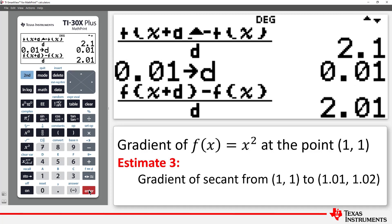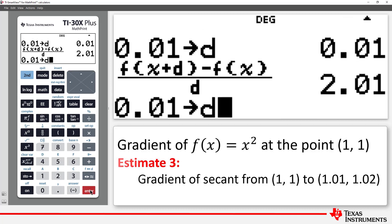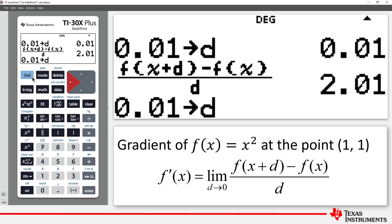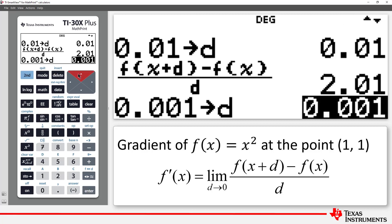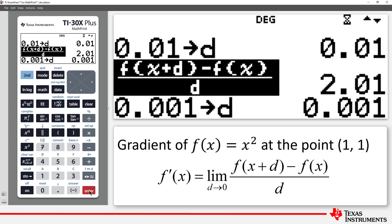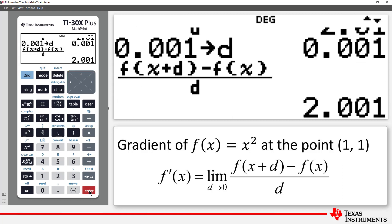The new gradient is 2.01. We'll go smaller again. Now the gradient is 2.001. It appears that our gradient is approaching 2.